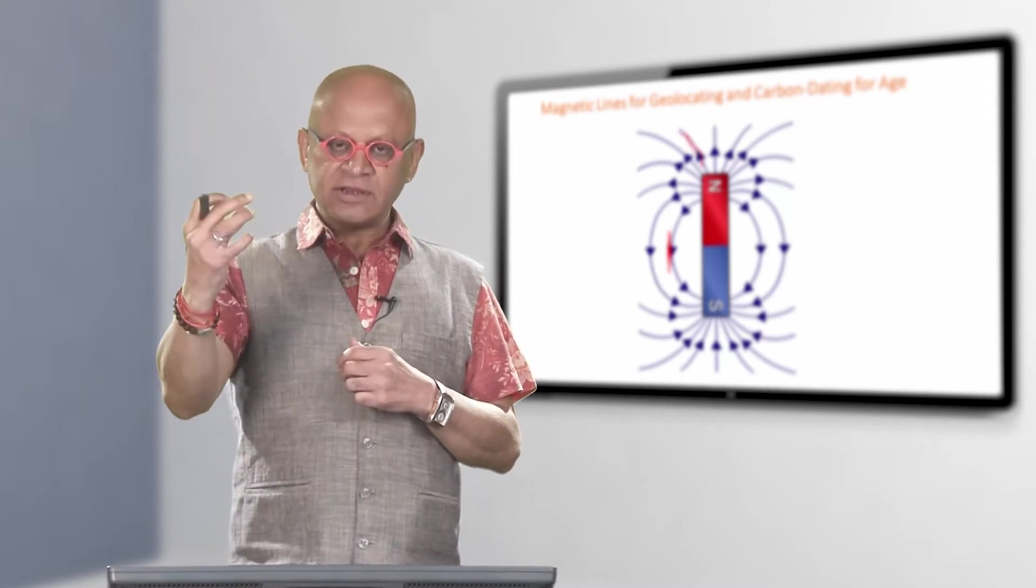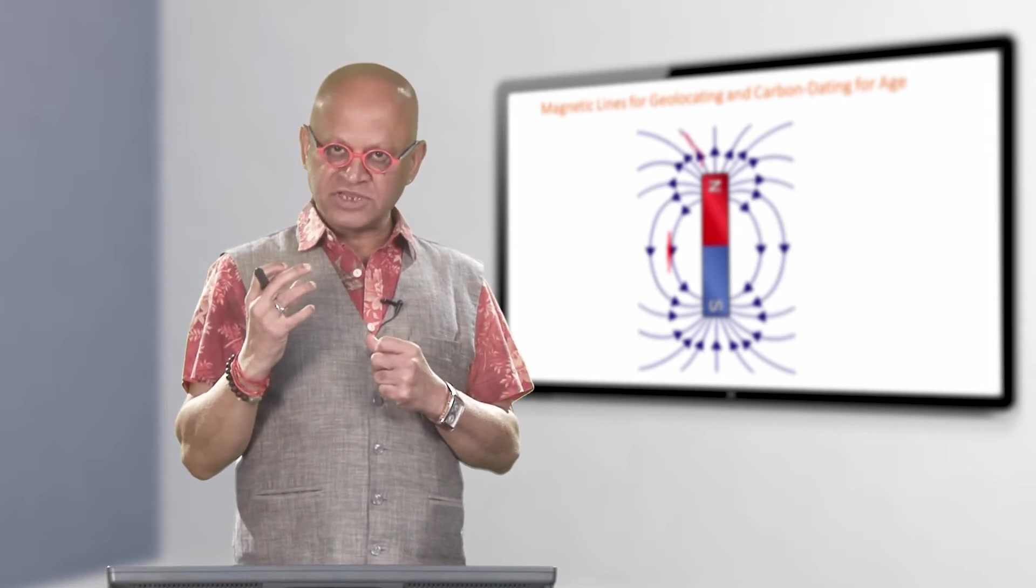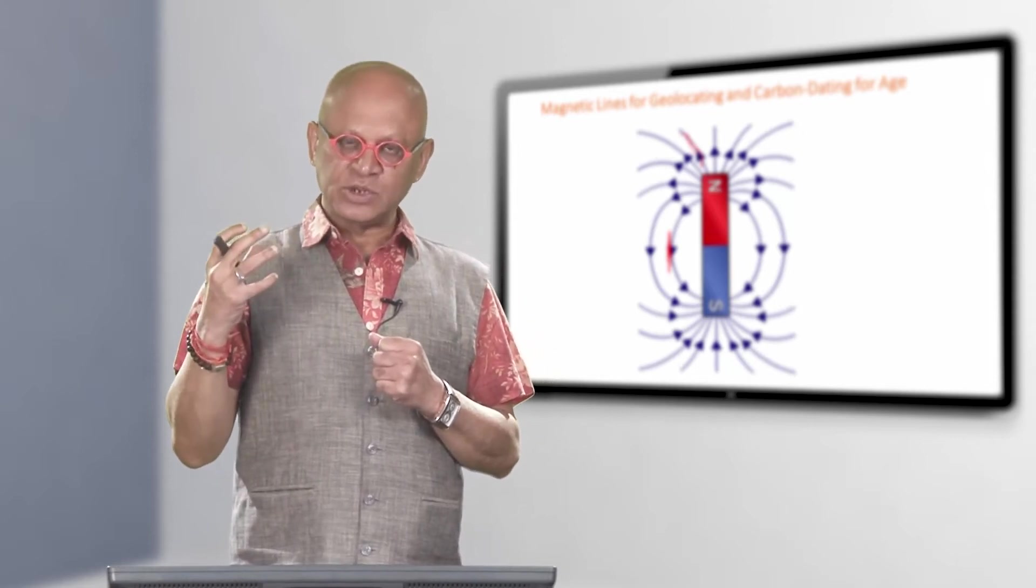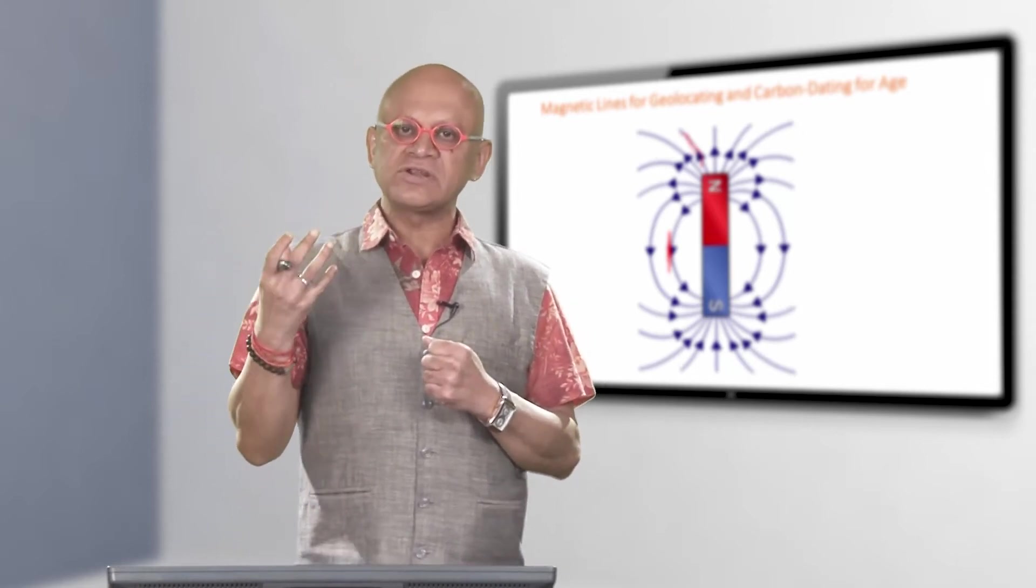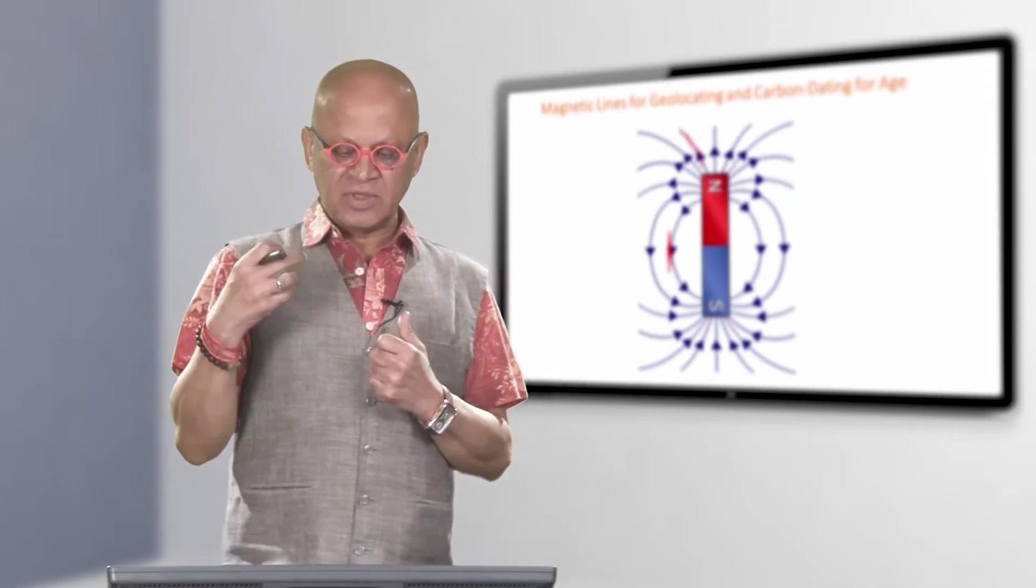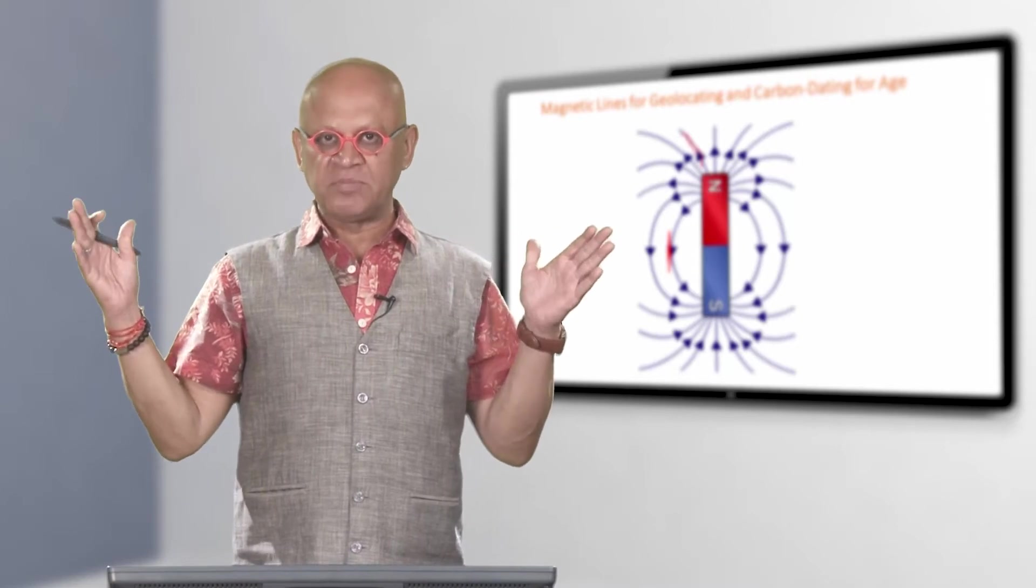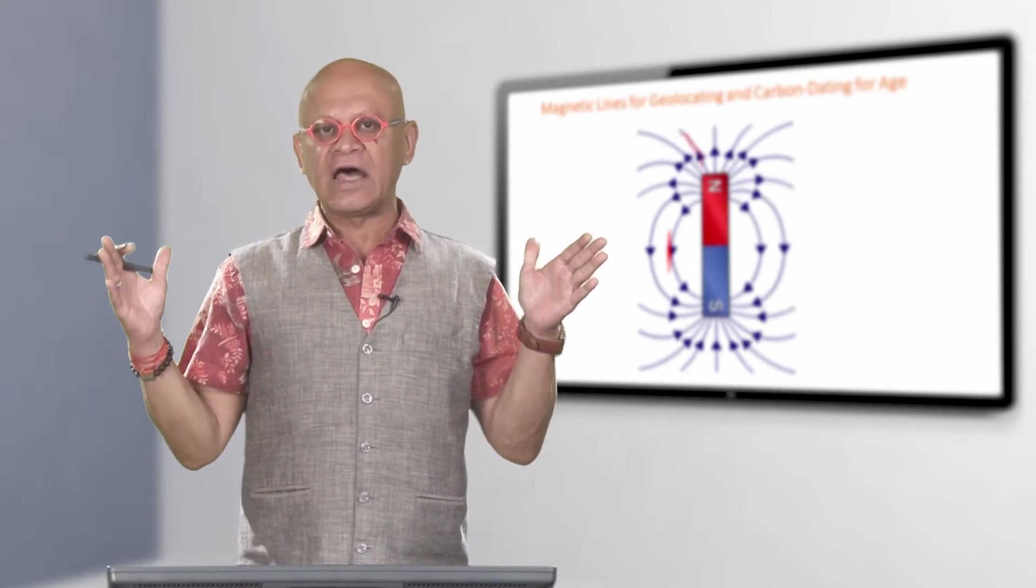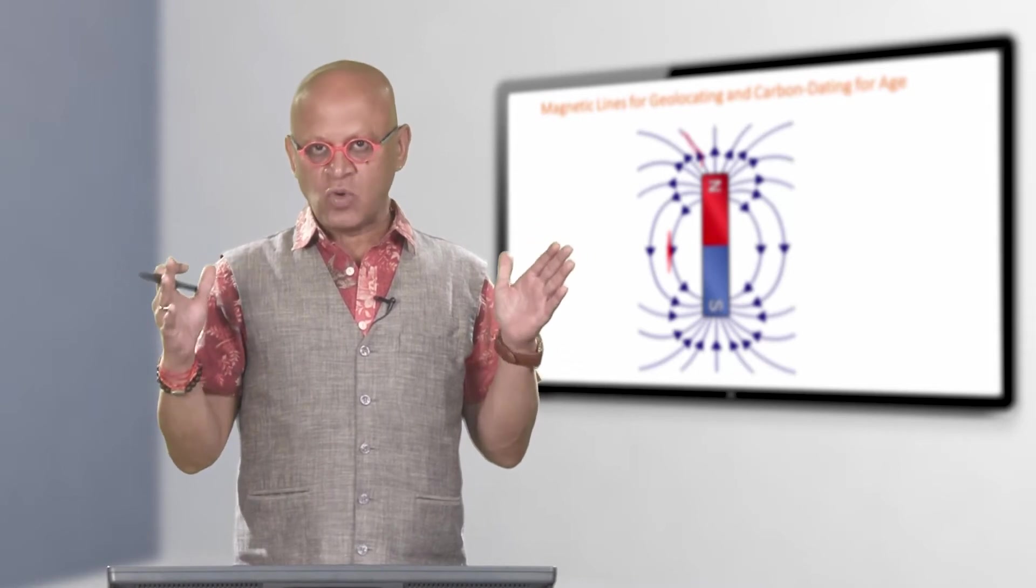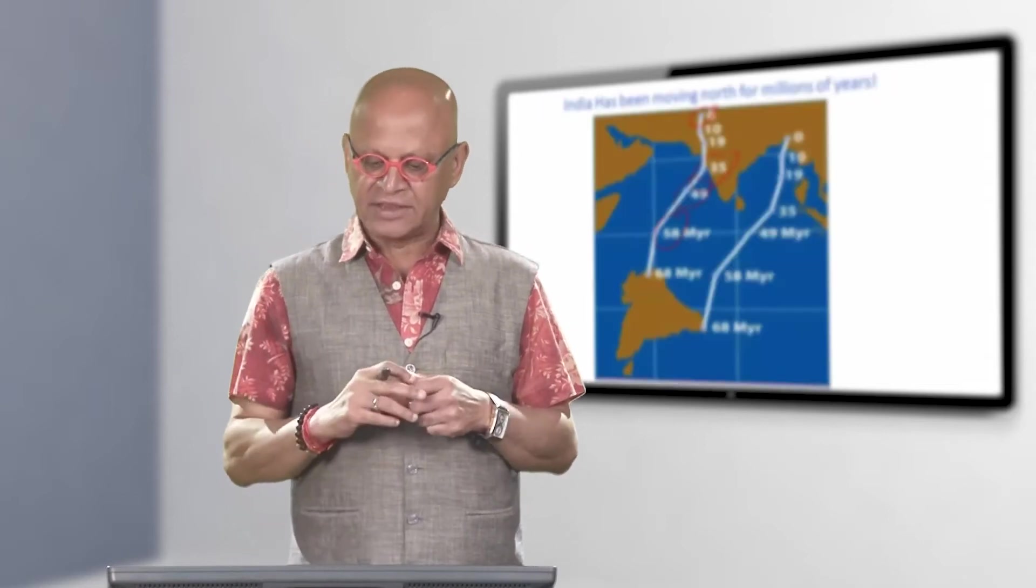You need to geolocate the rock that you found by using magnetic lines, and then you need to find out when it was at that latitude. For that, you use certain radioactive isotopes like lead and uranium, which have very long half-lives like a billion years. That allows you to say how long ago India was at that given location as determined by the magnetic lines.